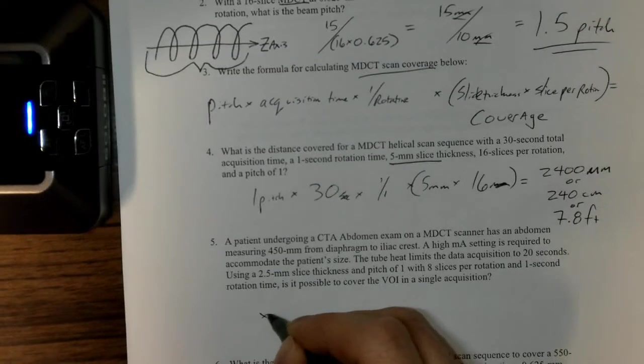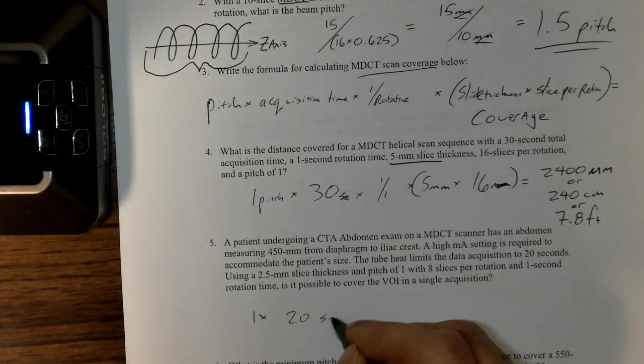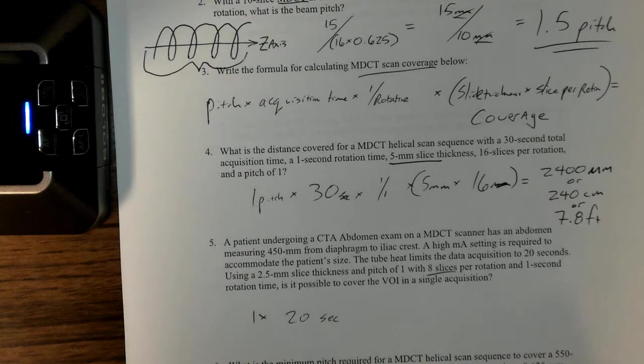One-second rotation time. Is it possible to cover the volume of interest in a single acquisition? We're going to just do our calculation. This is a real-world problem that we run into, especially for scanning on an older CT scanner like this eight-slice CT scanner.